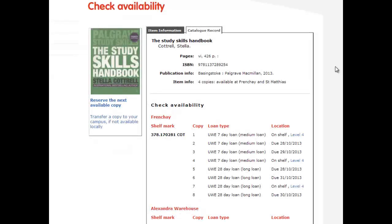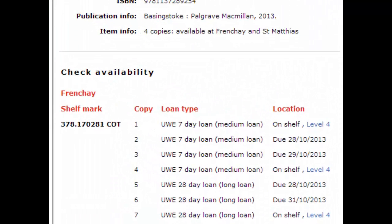If the resource is not electronic, you will be taken to the Check Availability page. Here you can see which campus the book is held at, how long you can borrow it for, whether it is on the shelf or on loan, and the shelf mark you need to find the book.